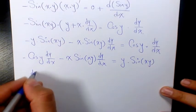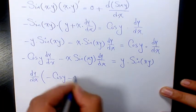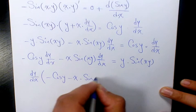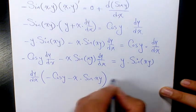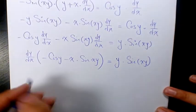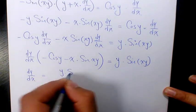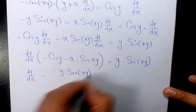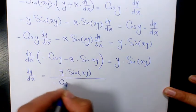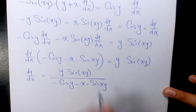Then I factored dy over dx. It's going to be negative cosine y minus x times sine xy equals y times sine xy. So dy over dx will be y times sine xy over negative cosine y minus x times sine xy.